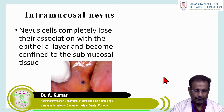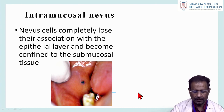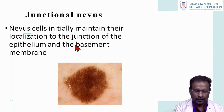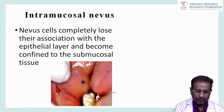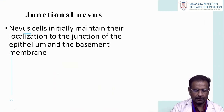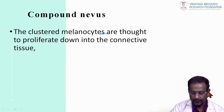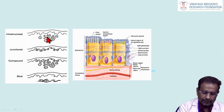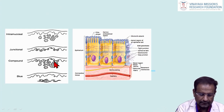In intramucosal nevus, nevus cells completely lose their association with the epithelial layer and become confined in the submucosal tissue. In junctional nevus, nevus cells maintain their localization at the junction of the epithelium and basement membrane. In compound nevus, clustered melanocytes proliferate down into the connective tissue — below the connective tissue. The diagram shows intramucosal within the epithelial layer, junctional at the epithelium-basement membrane junction, and compound below the connective tissue.